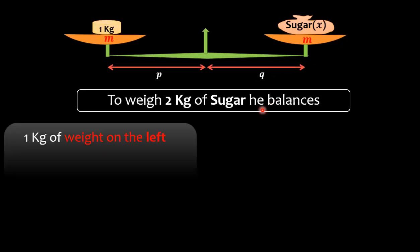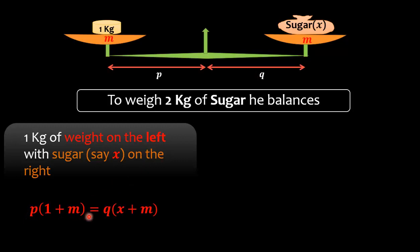So when he weighs 1 kg of weight on the left with sugar x on the right, he got p(1 + m) equals q(x + m). Let us suppose that x be the weight of the sugar he weighs. As the weighing scale is faulty, that means the sugar may not be the exact amount of 1 kg.